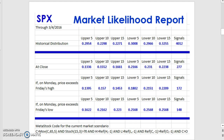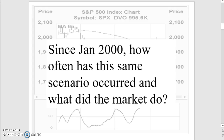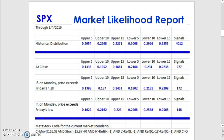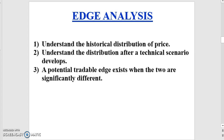I'm going to present the likelihood report, but to interpret it we need to back up. This is called edge analysis. To explain that report we need to first understand the historical distribution of price, and then understand the distribution of price after a specific technical scenario develops — much like what I just showed you. If the two are significantly different, we assume a potential tradable edge exists and we'll try to make heads or tails of that.